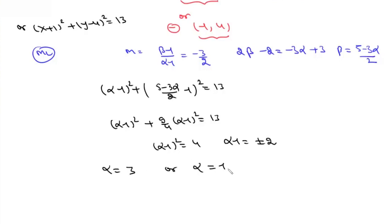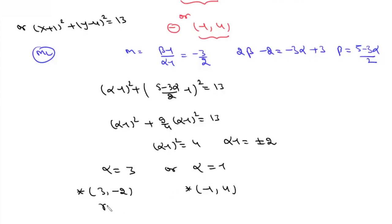If α = 3, the center is (3, −2). If α = −1, then β = (5 + 3)/2 = 4, giving center (−1, 4). With center and radius known, we can write the equation of the circle — same result as before.